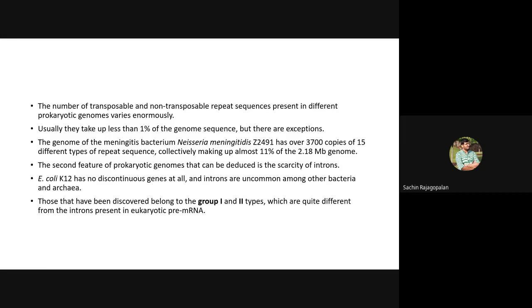In E. coli K12 especially, there are no discontinuous genes at all. Introns are very uncommon when it comes to bacteria and archaea. Those that have been discovered as spacers belong to group 1 or group 2 types of introns, and they are quite different from the introns we normally see in eukaryotic pre-mRNA.